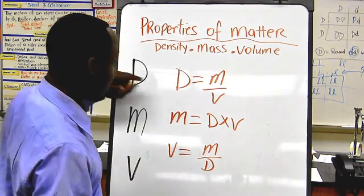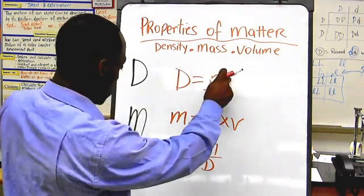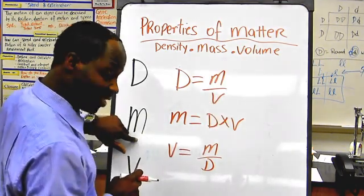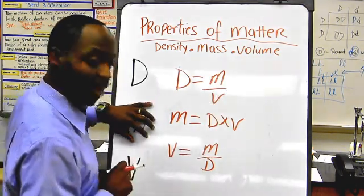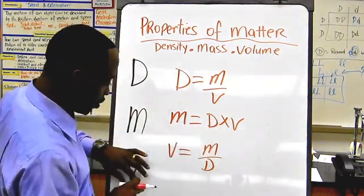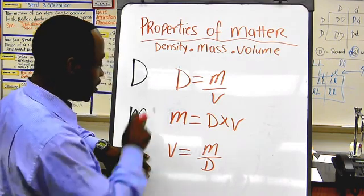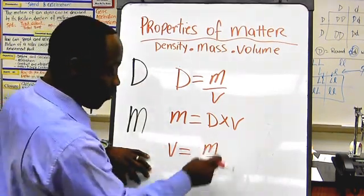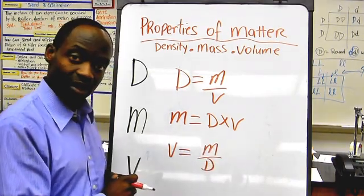So to find the density, is D equal M, which is always on top, over V? And to find my M, my mass, then I know it's in the middle, and I have to multiply. So M equal D times V. Now, V, I want to find my volume, and it does the same thing that D does. I said V equal M over D.